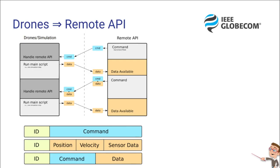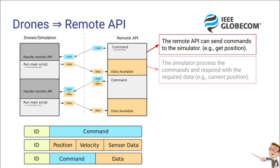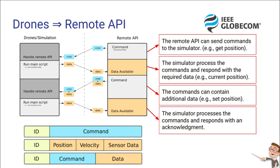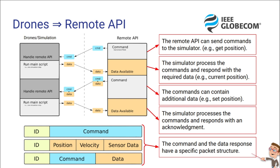Here we can see the communication process between the simulation and remote API. The remote API can send commands to the simulation, for instance, getPosition. The simulator processes the commands and responds with the required data, for instance, the current positions. Commands can also have additional data, like the setPosition command, and the simulator processes the command and responds with an acknowledgement. This is basically the data structure we have in each of the commands.